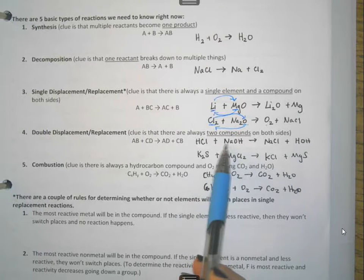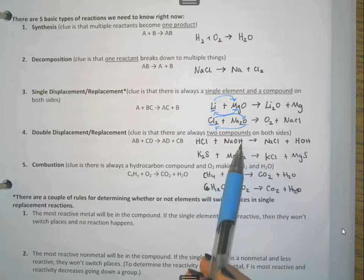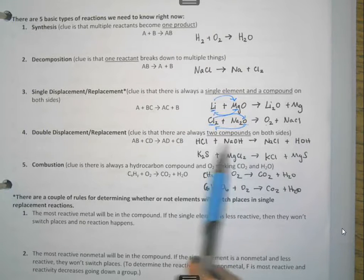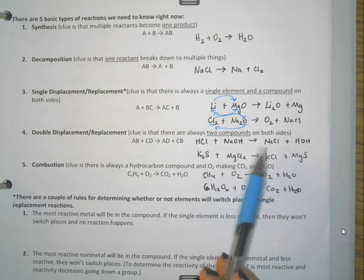I see the same thing here. This one actually has three, but here's capital N, capital O, capital H. That means that's a compound. So compound, compound, making a compound and a compound.